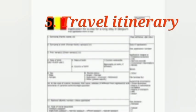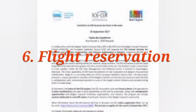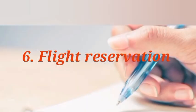Submit a detailed travel itinerary including information about your planned activities, places you intend to visit, and the duration of your stay in Belgium. Document six is a flight reservation — present a copy of your round trip or flight reservation or itinerary showing your entry and exit dates from Belgium.